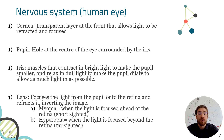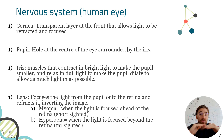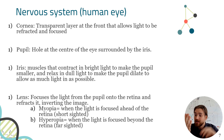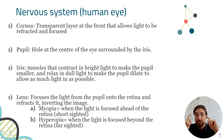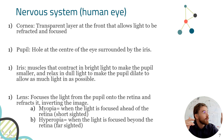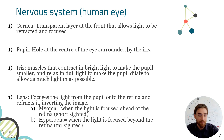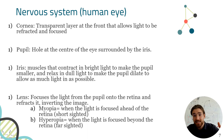After light enters through the cornea and the pupil, it hits the lens. The lens is what focuses an image. If you want to look close up, the background will be blurred because your lens hasn't shaped itself to focus on that background image. Likewise, if you look far away, close-up images will be blurred.